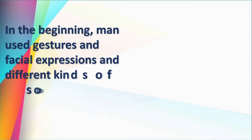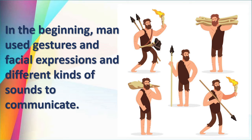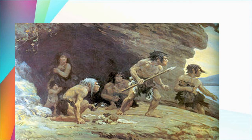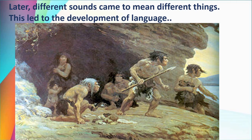In the beginning, in the ancient period, man used gestures, facial expressions, and different kinds of sounds to communicate. He was not aware of language or writing, so he made gestures and expressions to tell something to other people. Afterwards, he started making sounds — special sounds to warn about wild animals nearby or to alert others. Slowly, this led to the development of language.